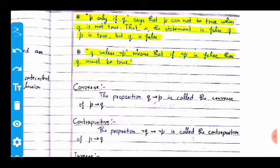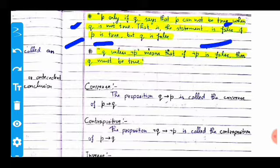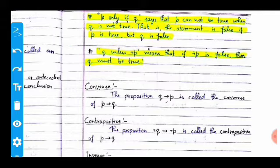'P only if q' says that p can be true only when q is true — the statement is false if p is true but q is false. 'Q unless not p' means that if not-p is false, then q must be true.